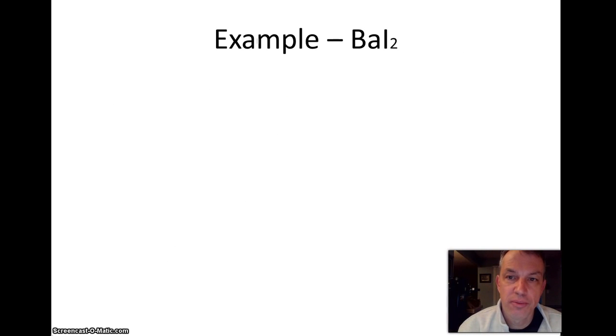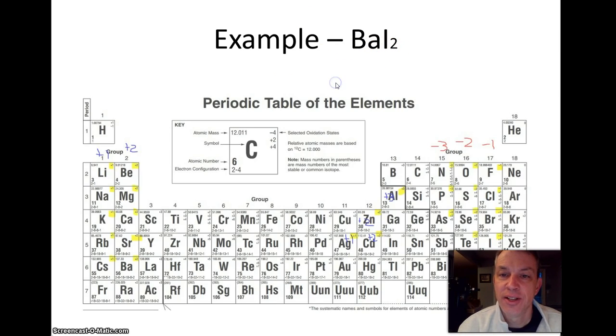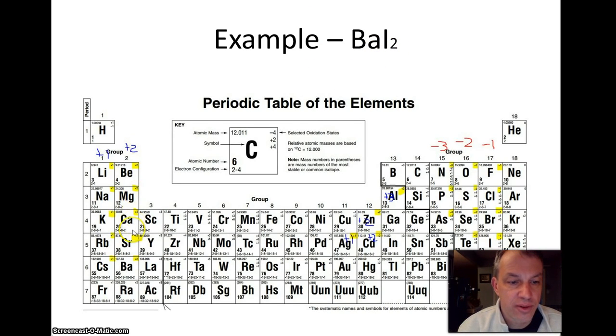So as an example, here is BaI2. If we look on our periodic table, there's Ba. It's the element barium. I is over here. This is the element iodine. So instead of saying barium iodine, it's actually barium iodide.